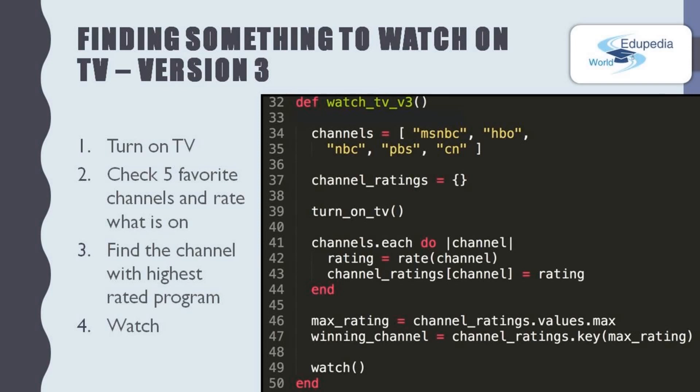And outside of the loop, we find the maximum rating value. And from the code line 47, we find the channel with that program of the maximum rating. And from the code line 49, we watch that TV channel.